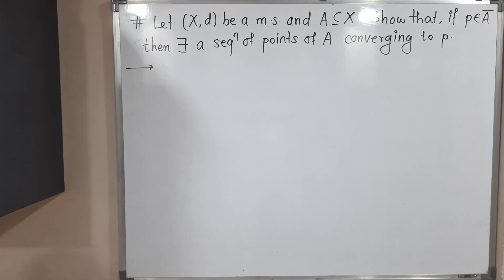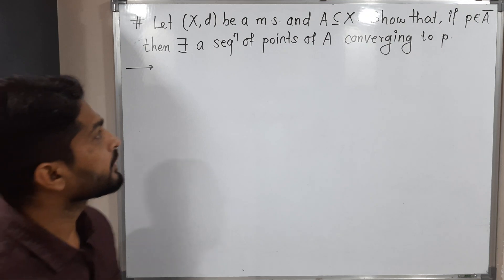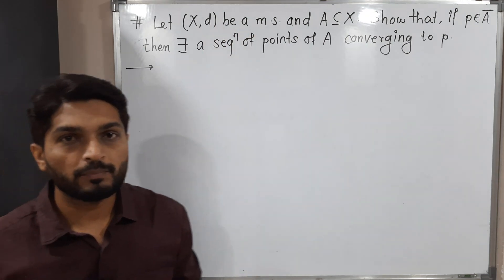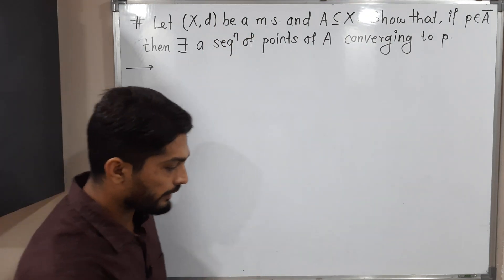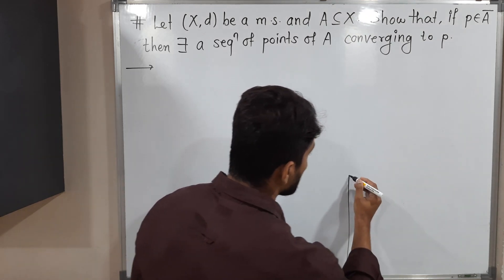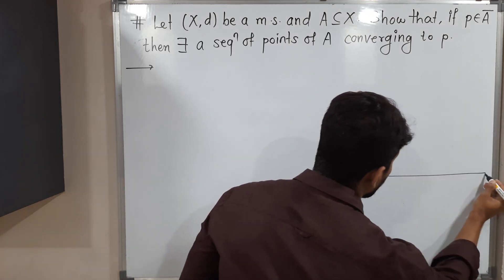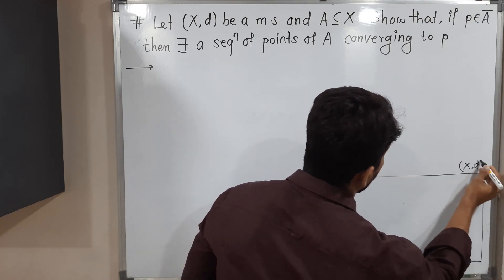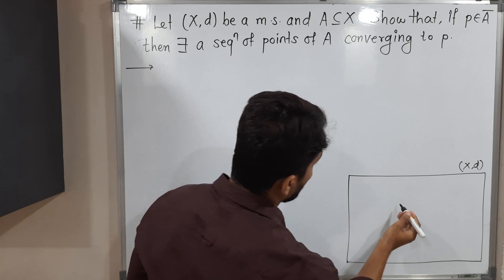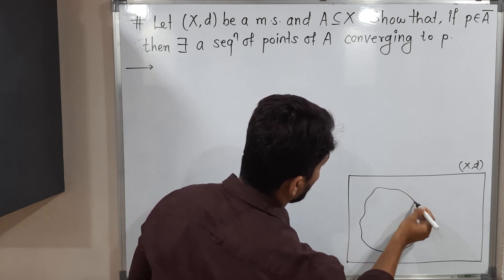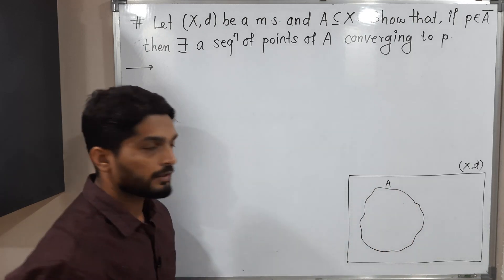Hi everyone. In this video we are going to discuss the proof of this theorem. They have given X with d as a metric space, and A is a subset of X. Let us draw a diagram so we can easily understand the concept. Suppose this is the metric space X with d. They are saying A is a subset of X, so let us take one set A which is a subset of X.